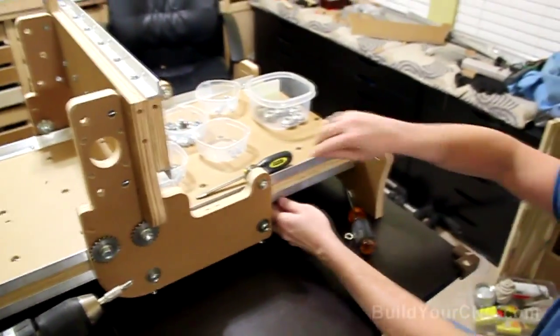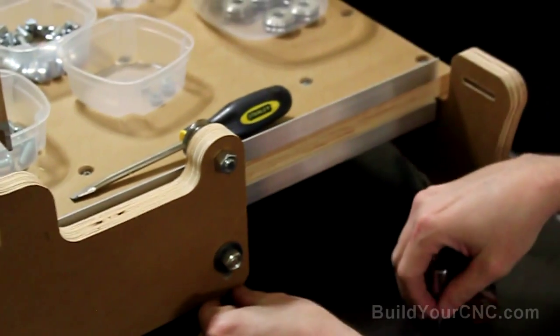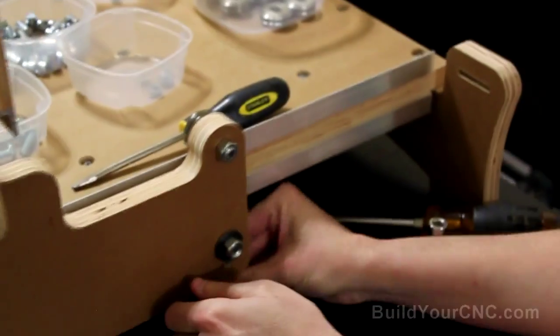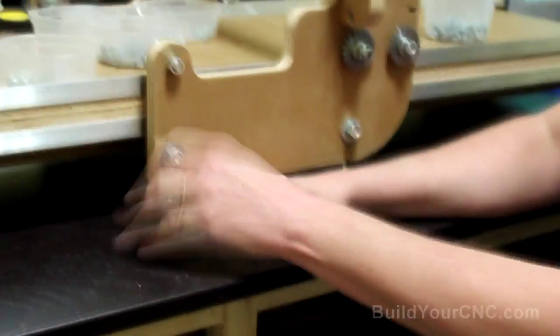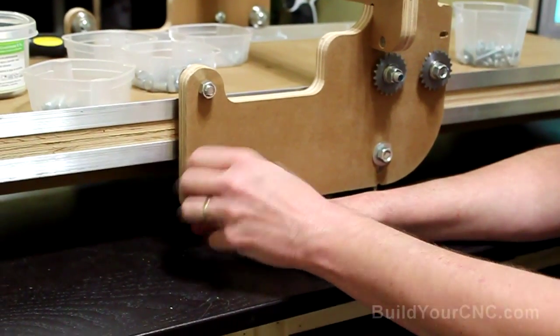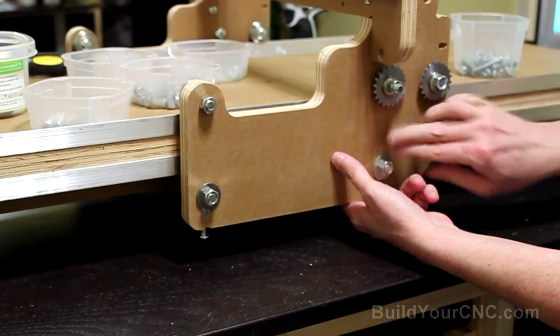since by tightening this, we may have actually put a little bit of torsion on the rail. So we're going to first loosen it, then we'll tighten it again.